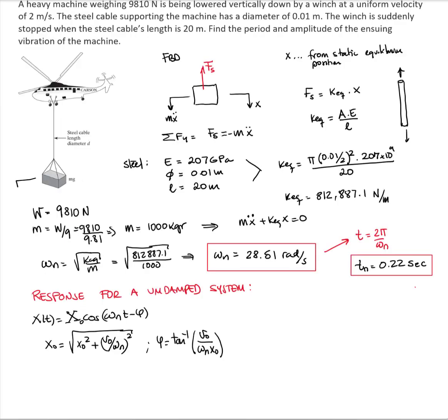We measure our system at the equilibrium position. Therefore, the initial position x0 is equal to 0. And they tell us that the heavy machine is being lowered with a vertical velocity of 2 meters per second. So, we will assume that is our initial velocity.